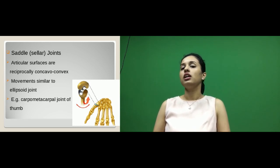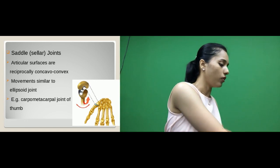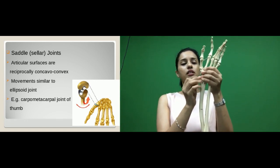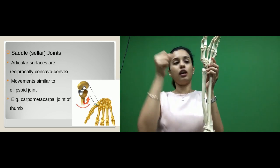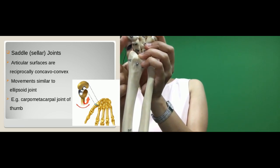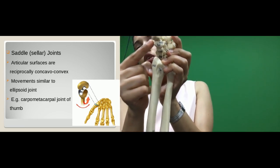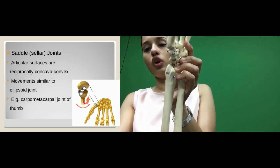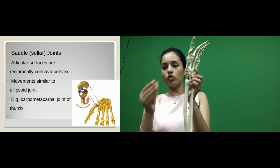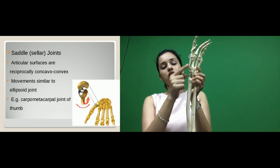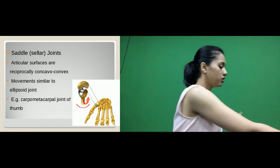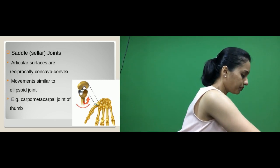Next is the saddle joint. Here the articular surfaces are concavo-convex — not totally concave and not totally convex. The surface is concavo-convex, as you can see in the picture. The saddle type is seen only in the thumb region, at the carpometacarpal joint of the thumb.